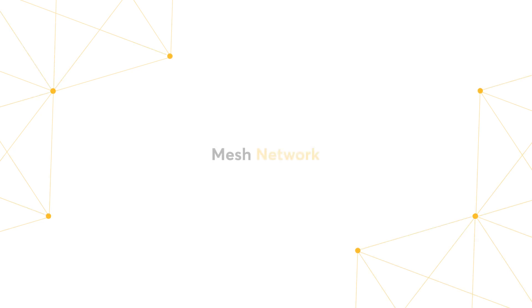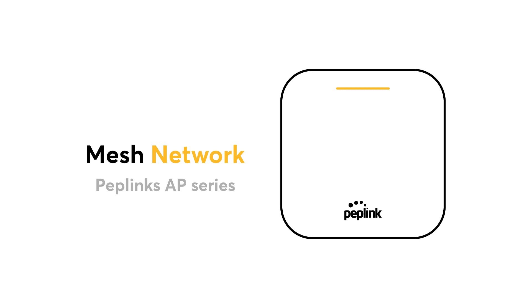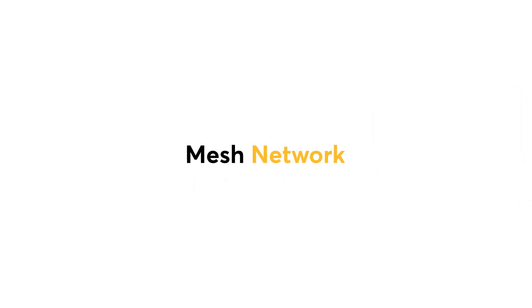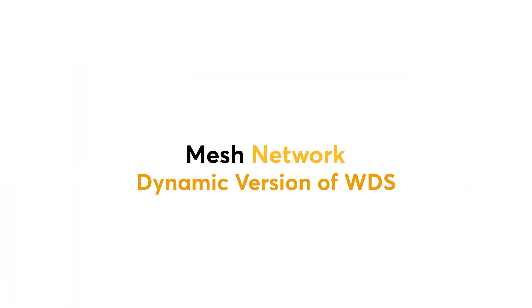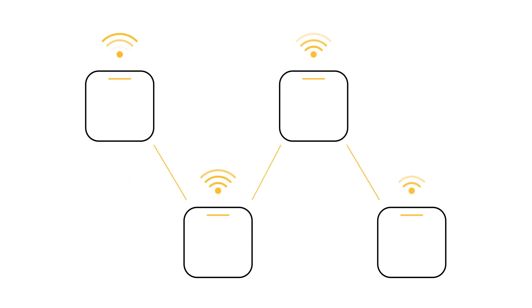As mentioned previously, I will also demonstrate how to set up a mesh network using devices from Peplink's AP series. A mesh network is essentially a more dynamic version of WDS. This is because instead of one access point communicating with another router or access point in a chain of devices like in a WDS,